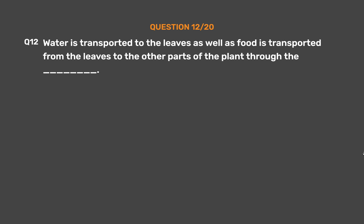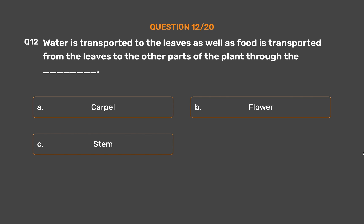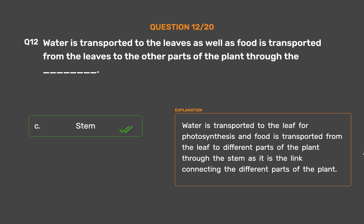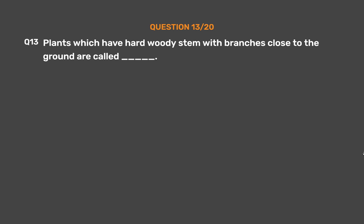Question 12: Water is transported to the leaves as well as food is transported from the leaves to other parts of the plant through the ___. Option A: Couple, Option B: Flower, Option C: Stem, Option D: Both stem and flower. The correct answer is Option C, Stem. Water is transported to the leaf for photosynthesis and food is transported from the leaf to different parts of the plant through the stem, as it is the link connecting all the different parts of the plant.